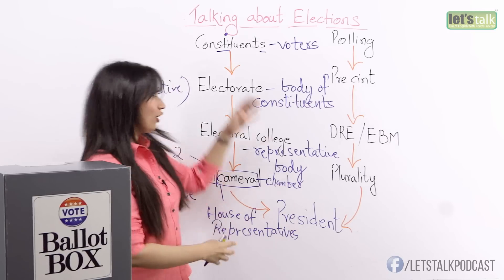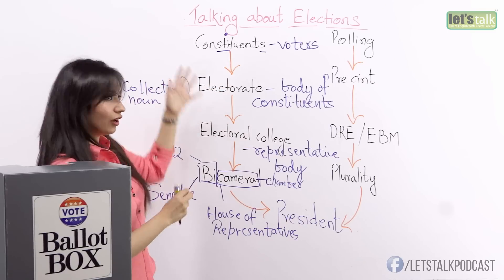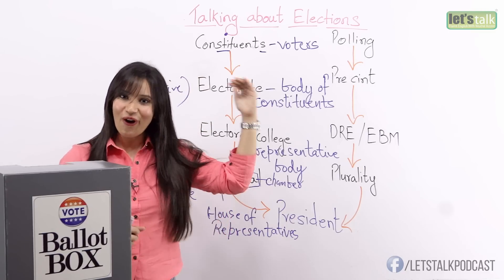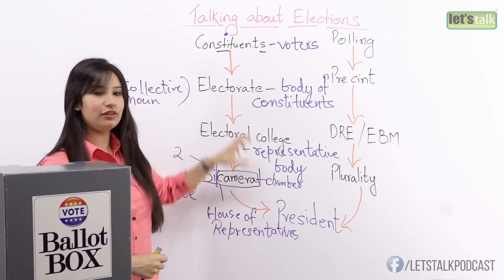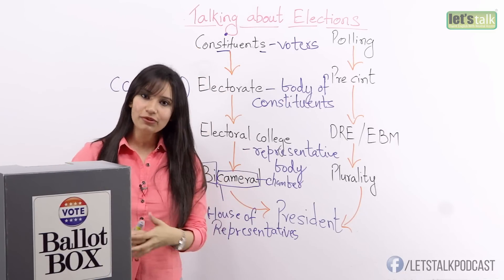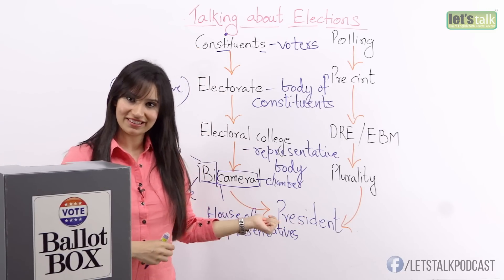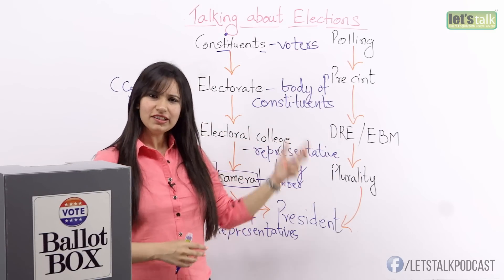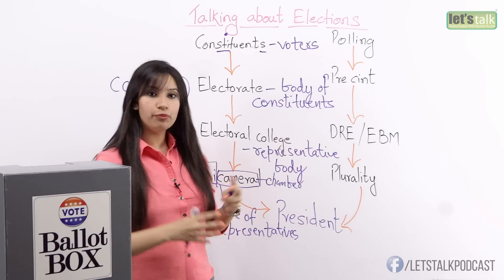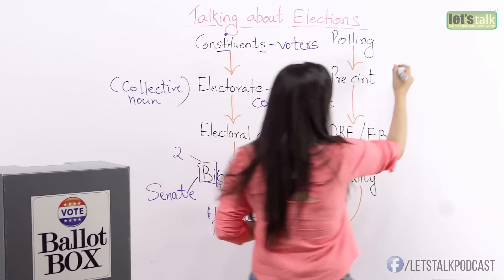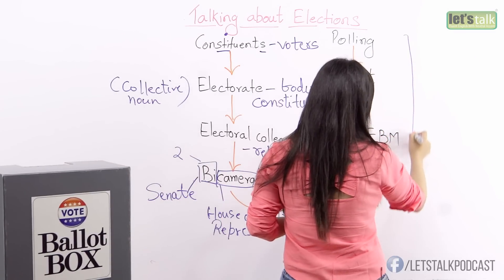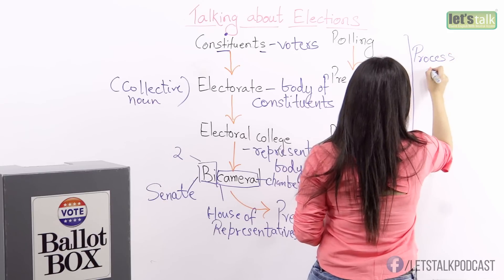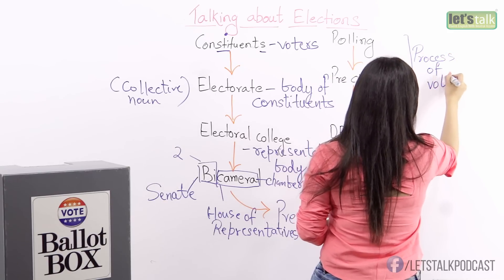At the end of this whole hierarchy of elections we have the president — and he's not actually at the end, he's at the top. All these people, the constituents and the electoral college, come together to vote for the president. Now let's look at the words on the other side and talk about the process of voting.